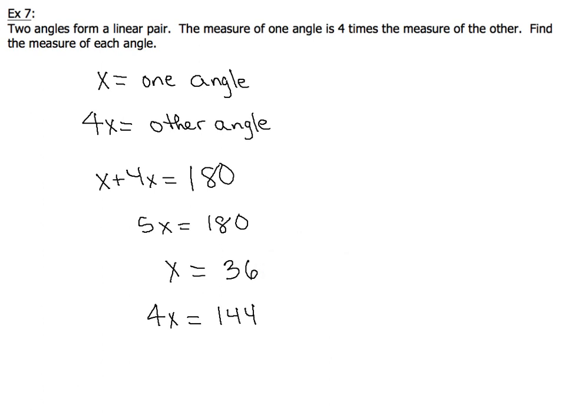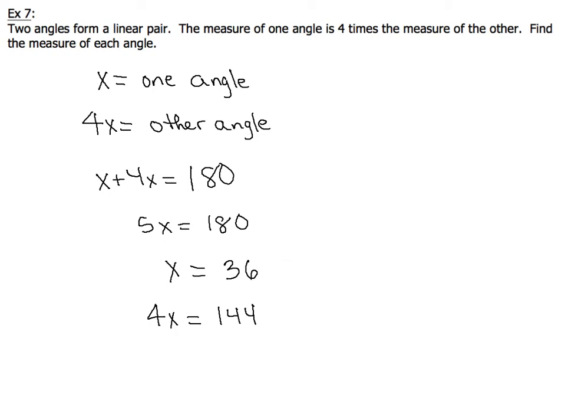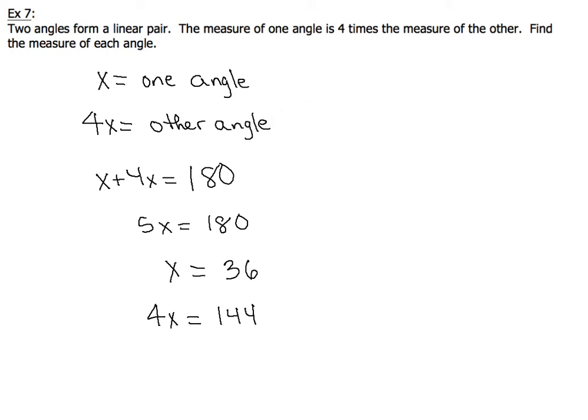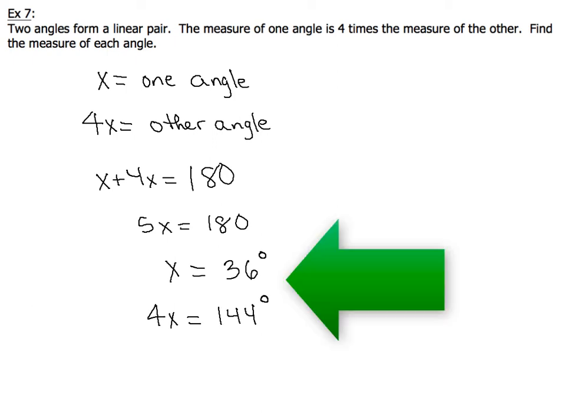But we're not done — we've got to find the measure of each angle. One angle is x, which is 36 degrees. The other angle is 4x, or 4 times 36, which gives us a value of 144 degrees. Make sure we don't forget the degree symbols for each of our angles.